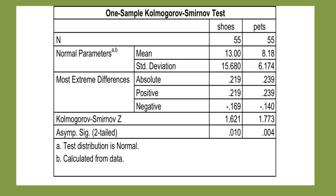So there's the Kolmogorov-Smirnov test — don't you just love it? I was looking at how many shoes you've got and how many pets you own, and whether that is normally distributed. That's what it would look like in SPSS, and this is how you would report it.